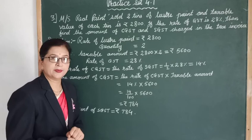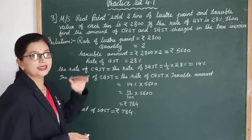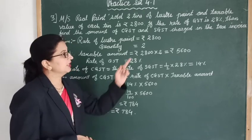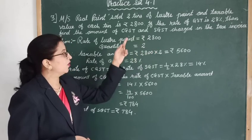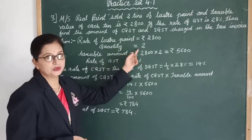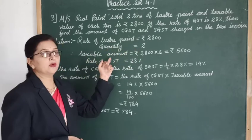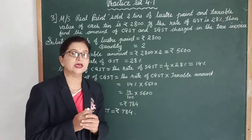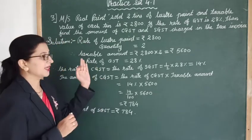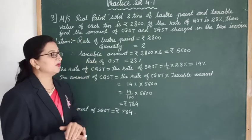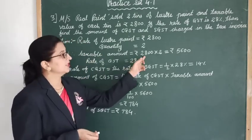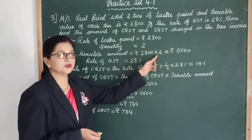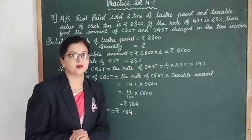The GST rate is 28%. The rate of lustre paint is 2800 rupees, and the quantity is 2. Taxable amount means the amount on which we are going to pay the GST. So, taxable amount is 2800 multiplied by 2, which gives us 5600 rupees.